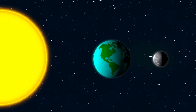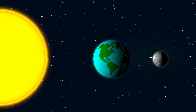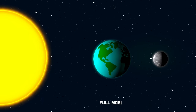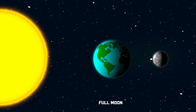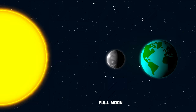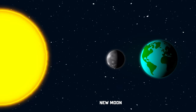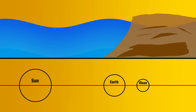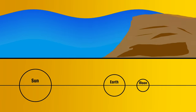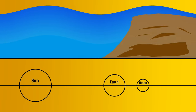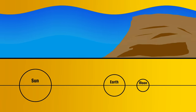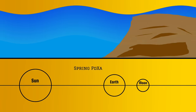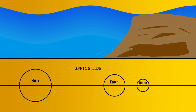If the earth is between the sun and the moon, it is a full moon. If the moon is between the sun and the earth, it is a new moon. Because these two configurations place all three bodies in the same straight line, there are more waves and tides. This phenomenon is called spring tides.